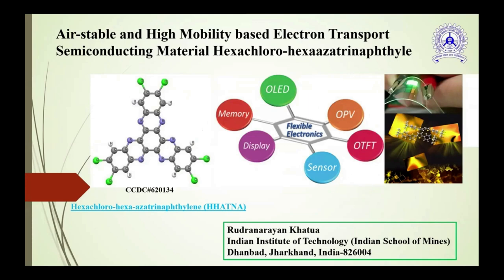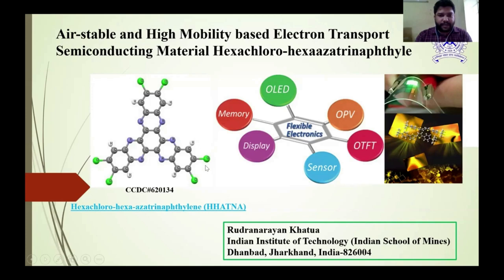I am Rudranarayan Katwa from IIT ISM Dhanbad. I am going to talk about air-stable and high-mobility electron transport semiconductor material hexachloro-hexa-azatrinaphthylene. This is a star-shaped compound with chlorine atoms substituted in the perylene core. It is highly planar and has several optoelectronic applications in display, memory, OLED, and OPV. Moving to the results and discussion section: structural parameters were collected from the Cambridge Structural Database. We calculated the density plot of HOMO and LUMO — LUMO is evenly distributed over the molecule, while HOMO is distributed in the rings.